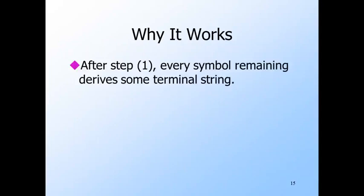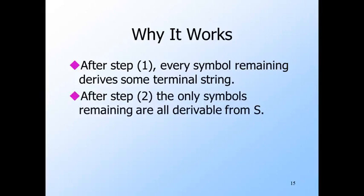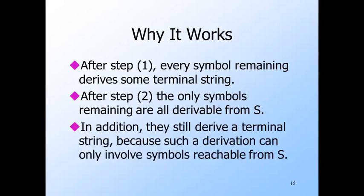Here's why first eliminating variables that don't derive terminal strings is the right thing to do. After eliminating those variables, every remaining symbol is either a terminal or it is a variable that derives a terminal string. After removing symbols not reachable from the start symbol, all remaining symbols appear in some derivation from the start symbol of some sentential form. But the variables that appear in some sentential form still derive a terminal string, because such a derivation can only involve symbols that are also reachable from the start symbol.